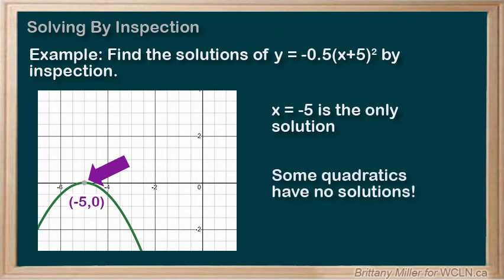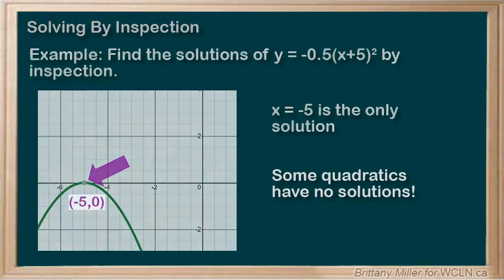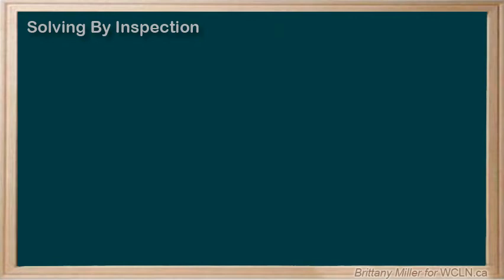Remember that you can even have 0 solutions if the parabola doesn't cross the x-axis. Well, that's pretty easy, isn't it? Can you think of any cases where this method might not work?